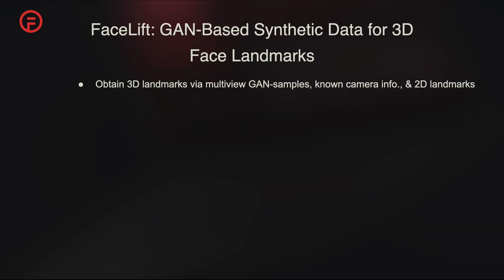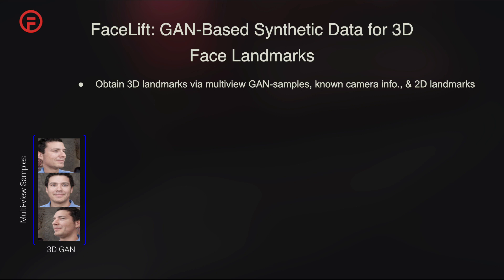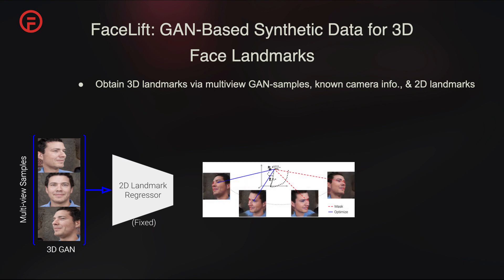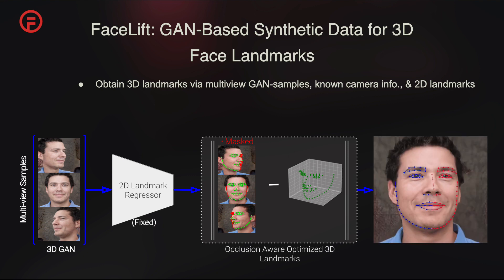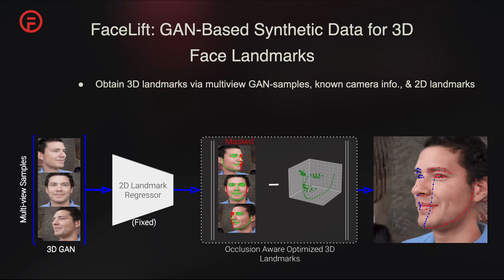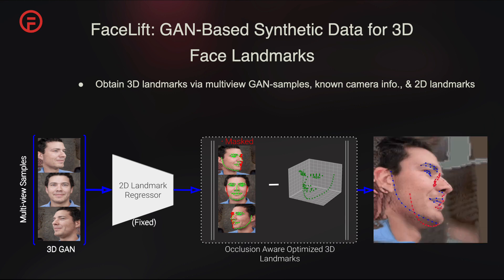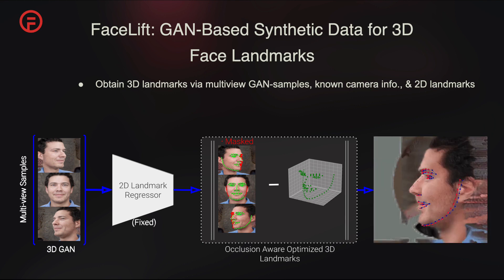We propose a pipeline that uses a 3D-aware GAN to generate synthetic data for training a 3D landmark detector. This involves sampling multi-view images from the GAN, predicting 2D landmarks with a state-of-the-art detector, defining a set of visibility masks for each view in a fixed set of multi-view virtual cameras, and then optimizing a single set of 3D landmarks with visibility masks to account for self-occlusions. As a result, we obtain 3D landmarks for a given GAN latent and can render novel poses and their landmarks, even for extreme poses that the 2D detector fails on.